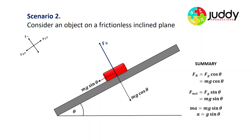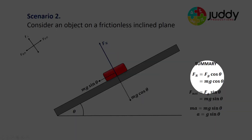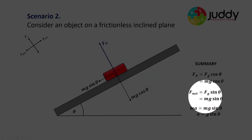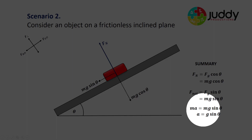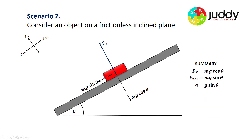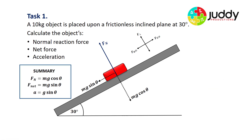In summary, we have an equation for the normal reaction force, and an equation for the force down the plane — which in this case is the net force. We also apply Newton's second law, F = ma, to derive the acceleration down the plane: A equals g sin theta. These three equations are used for a frictionless inclined plane.